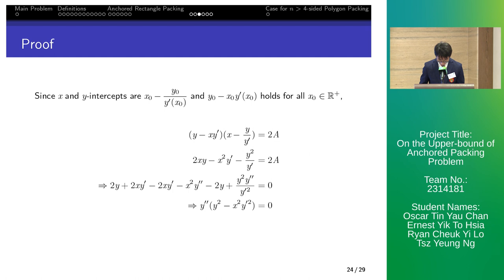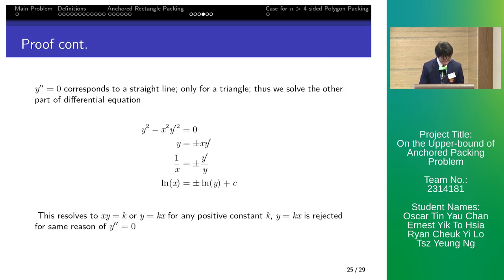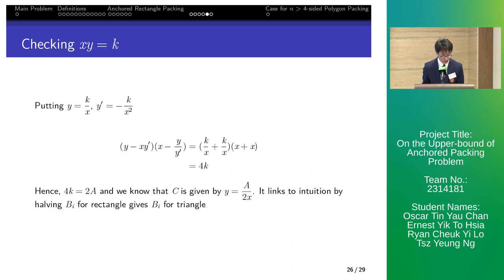Then we have two cases. First, the y' equals 0 gives a straight line, while for the other case, we reject the solution of y equals kx as it only accounts for one maximal triangle. Thus, the other term resolves to xy equals k. Then we check for xy equals k by substituting y equals k over x back to the differential equation. We get 4k equals 2a and y equals a over 2x is the border function of single source point.